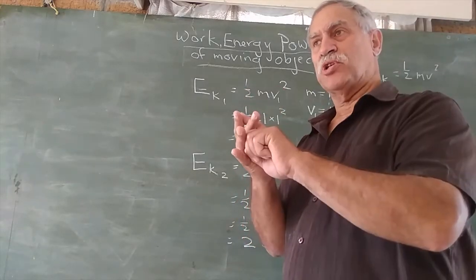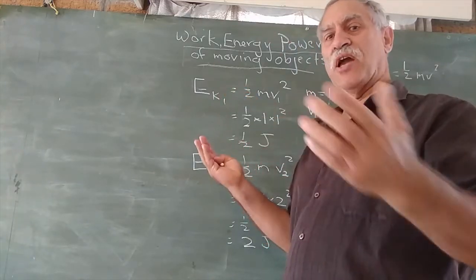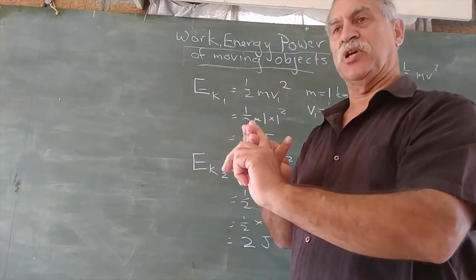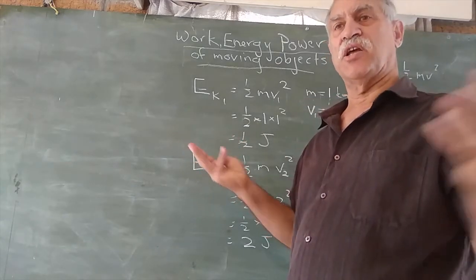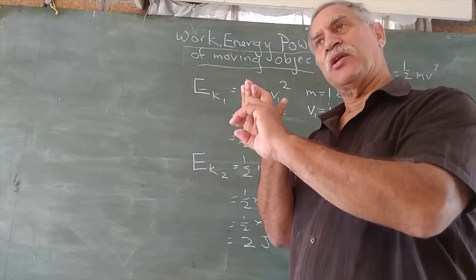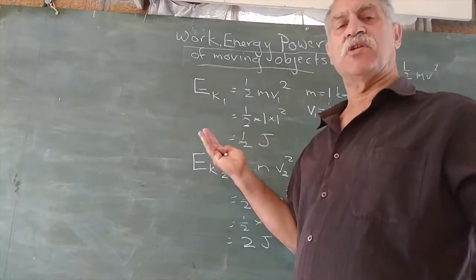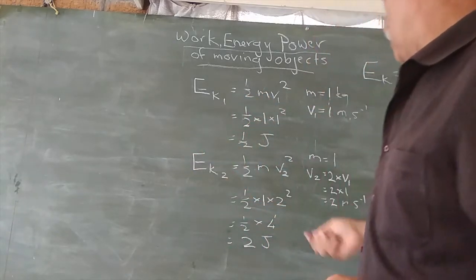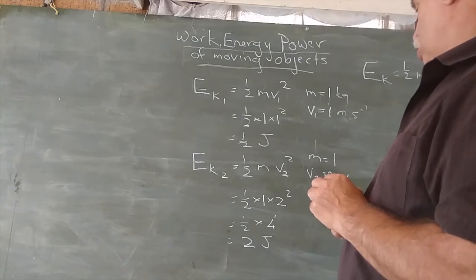There's a square relationship. If you go 2 times the speed, 2² = 4. If you had 3 times the speed, it would have 9 times the energy, because 3² = 9. Velocity squared.